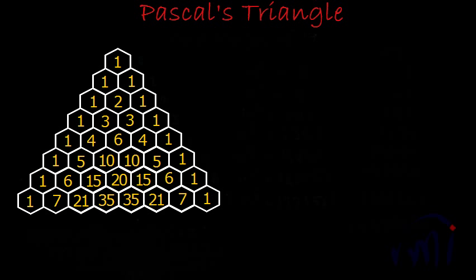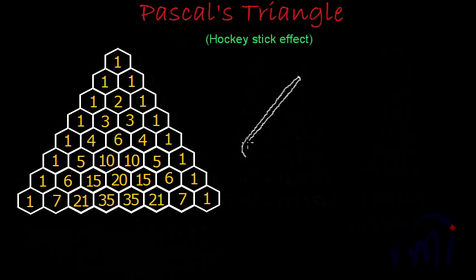In this series of Pascal's Triangle, today we are going to learn the hockey stick effect in Pascal's Triangle. So how does a hockey stick look? A hockey stick is something like this, or it can be something like this. If I try to draw a mirror image of that, it will be something like this. What are we going to find in this shape in Pascal's Triangle?